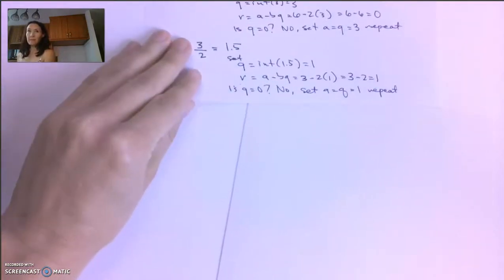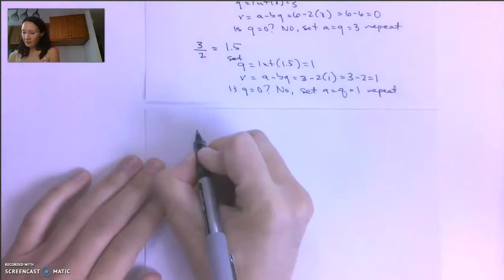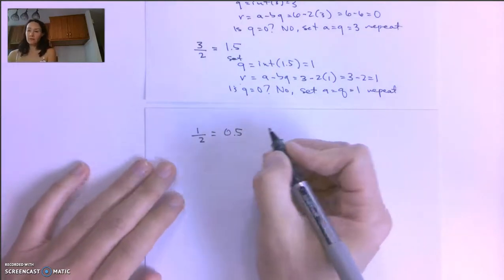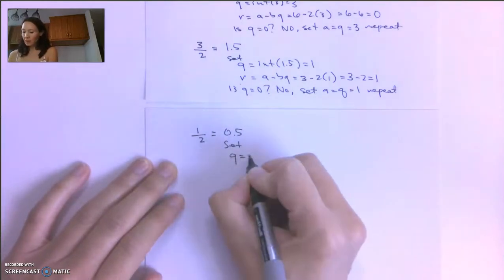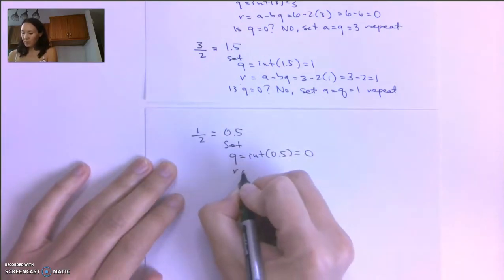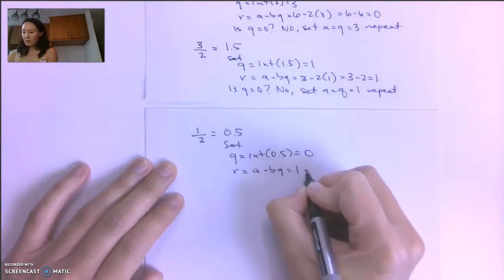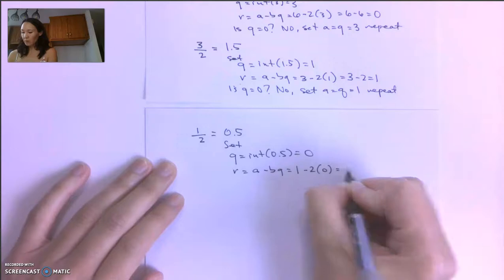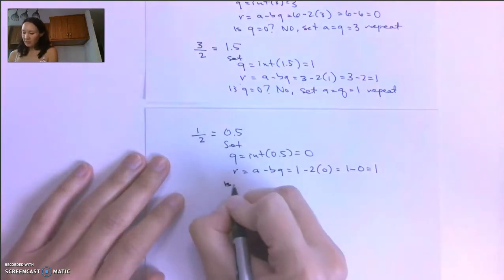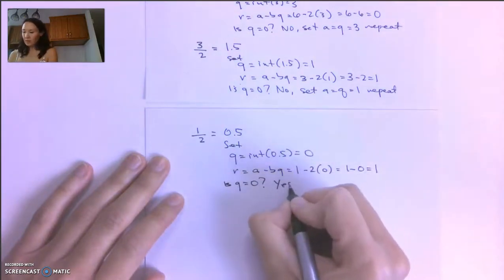So our next step, with A equal to 1, we have 1 divided by 2. That gives us 0.5. So we set Q equal to the integer part of 0.5, so that's 0. We set R equal to A minus BQ, which is 1 minus 2 times 0, which is 1 minus 0, or 1. And now we ask: is Q equal to 0? Our Q is indeed equal to 0, so the answer is yes.